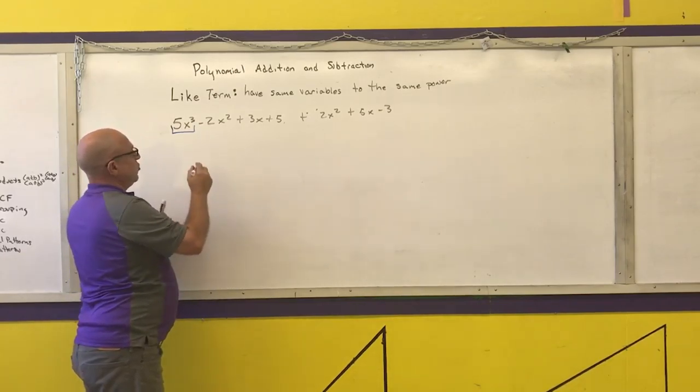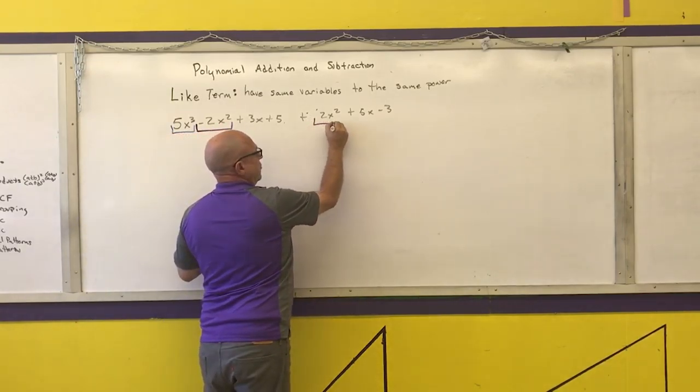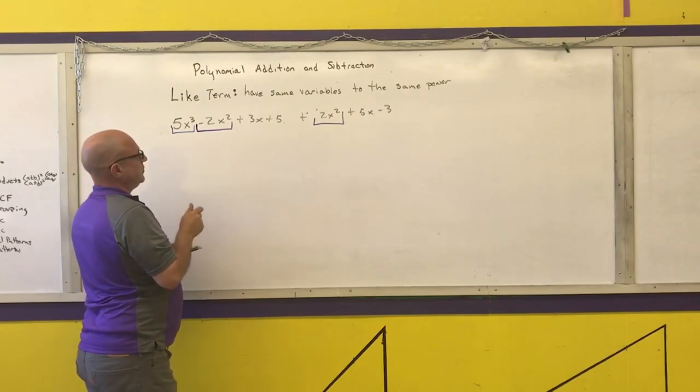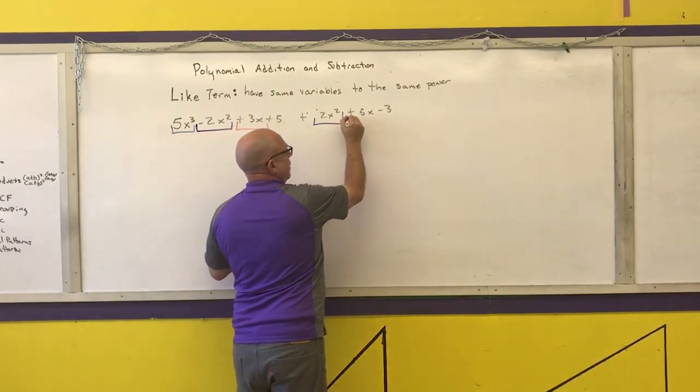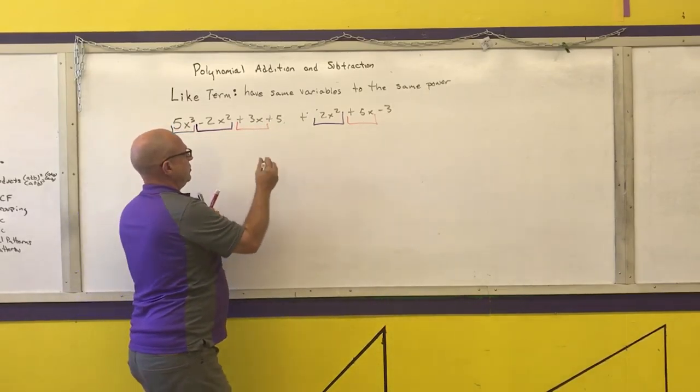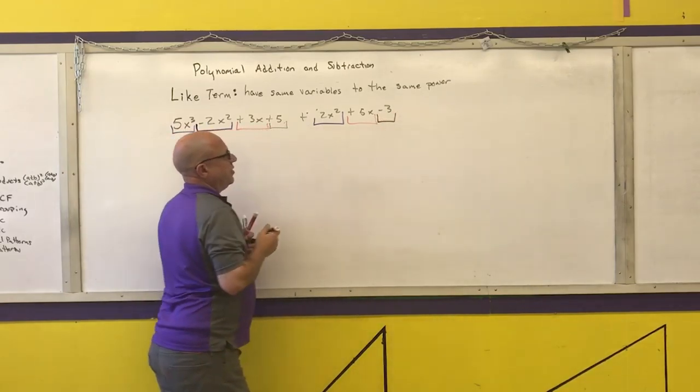The next highest degree is my squares. I have negative two of them and two more of them. Then I have some x's, three and five. And then I have some constant terms, five and negative three.